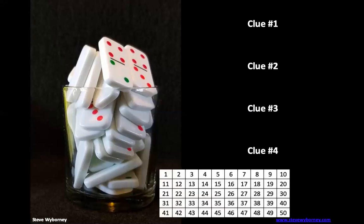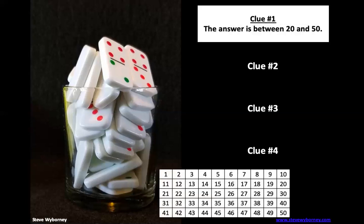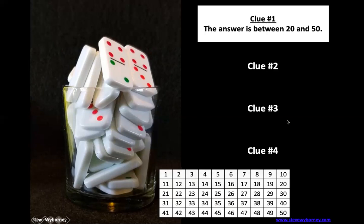Let's take a look at clue number one. The answer is between 20 and 50. One of the key words here is between. If it's between 20 and 50, that means it can't be 20 and it can't be 50.